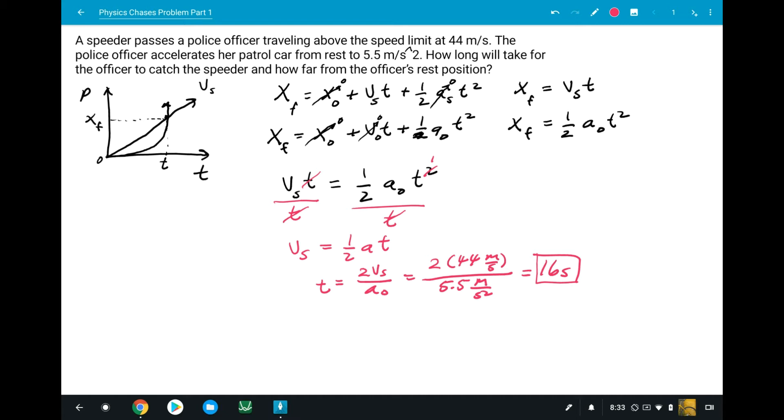Well, finding the distance is actually pretty easy. We can take one of these equations, either one on the right hand side there, and we could solve for the distance. I'm going to take the speeder's because it's a little easier. So the velocity of the speeder is 44 meters per second times the 16 seconds. That's going to give us 704 meters. And if you're concerned, well, check the police officer's. You're going to notice that you get the same thing. One half times 5.5 meters per second squared times the 16 seconds squared. And that also is equal to 704 meters.